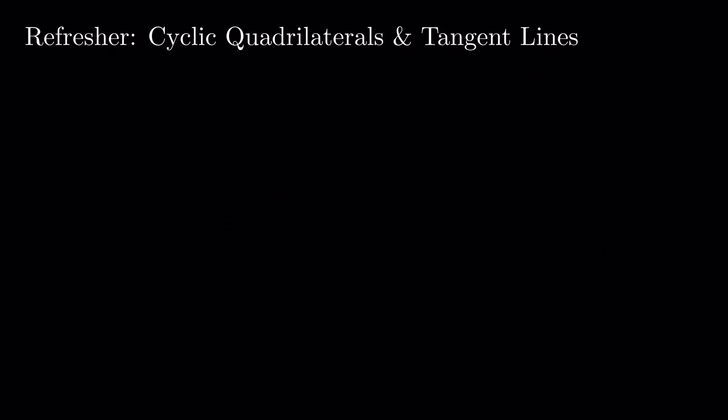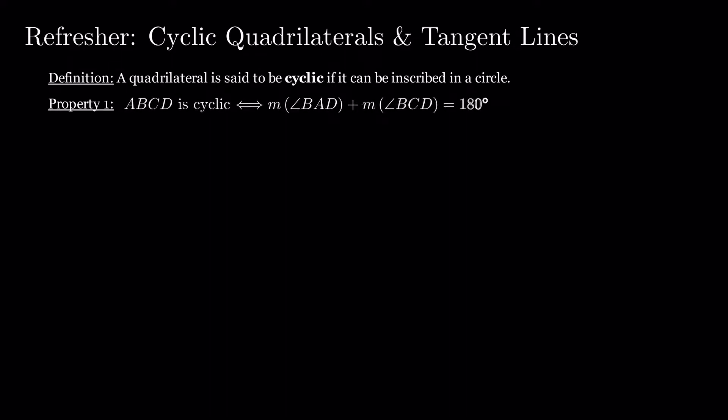Let's go over some definitions and properties that we will need. A quadrilateral is said to be cyclic if it can be inscribed in a circle. ABCD is cyclic if and only if two opposite angles are supplementary. Without loss of generality, let's consider in our proof that these two angles are BAD and BCD.